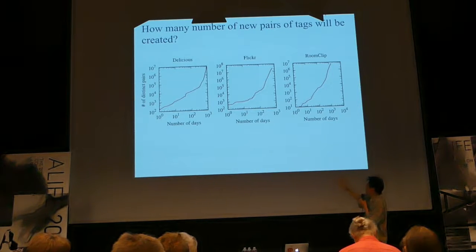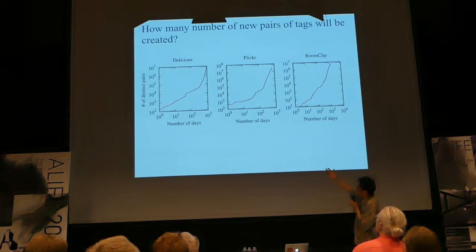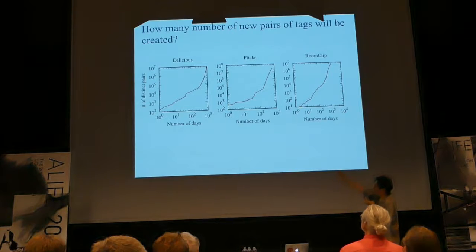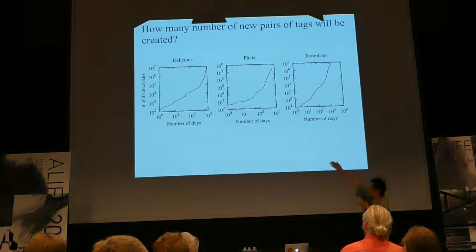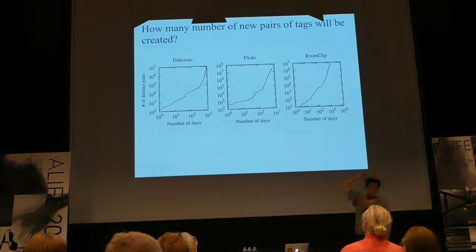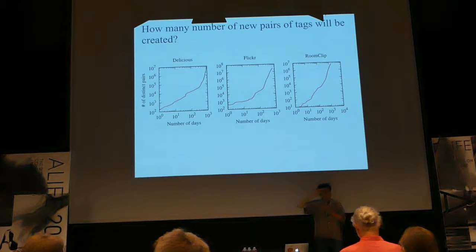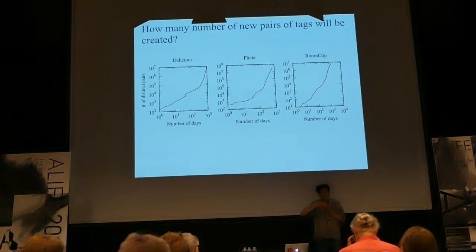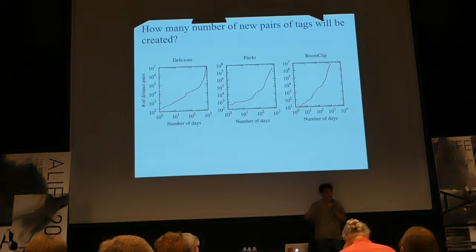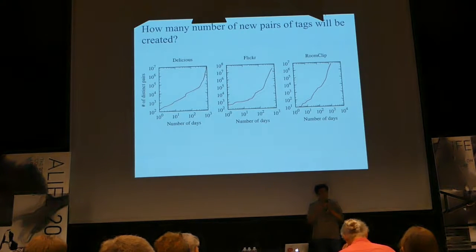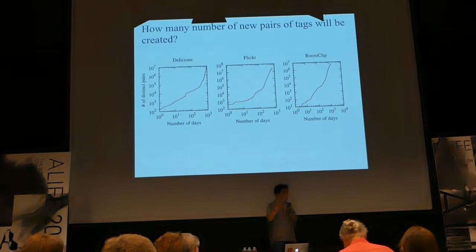Comparing Delicious, Flickr, and Roomclips — after about 2.5 years, there are some tipping points. The vertical lines show the number of distinct pairs of tags, not just single tags. The number of pairs is increasing abruptly at certain points. The first two years seem to be more about creating novel single tags, but after 2.5 years there's a creation of coupling — combinatorial complexity is emerging after this tipping point.